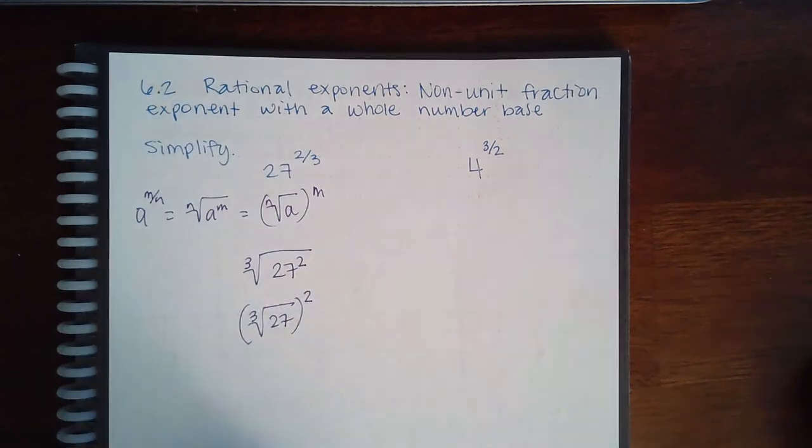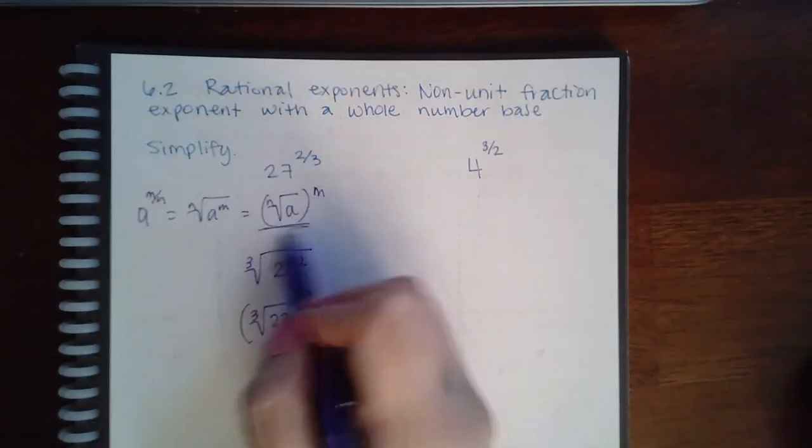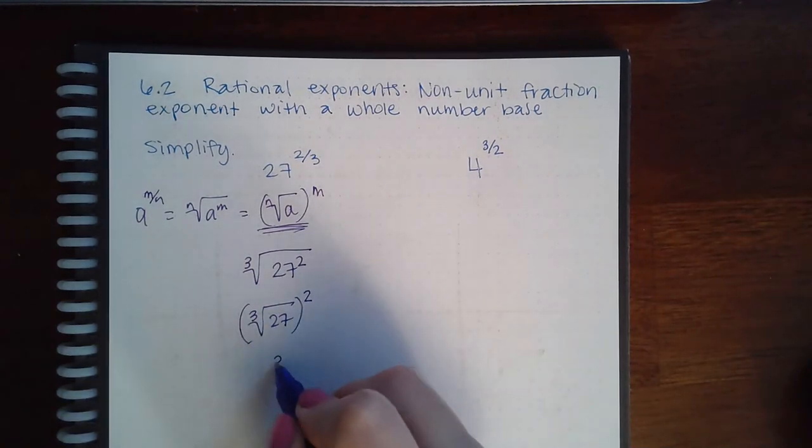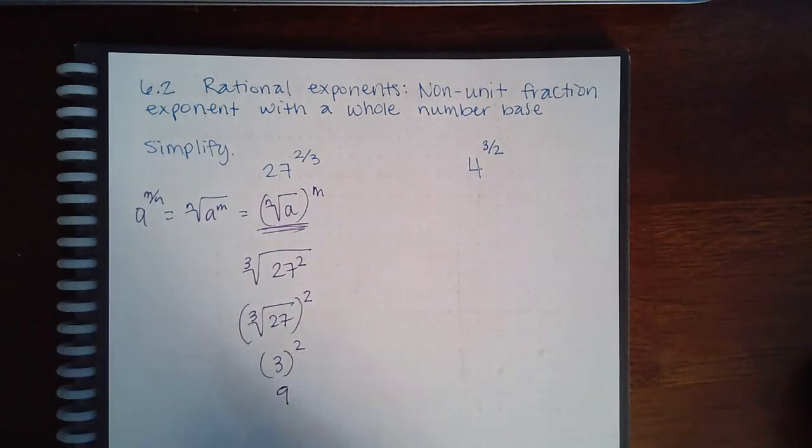Okay, so we're actually going to use this form when we convert these. Now the cube root of 27 we know is 3, and if I square that I get 9. And so same thing here.